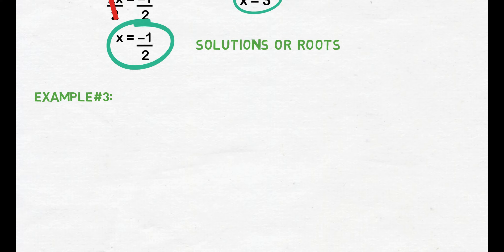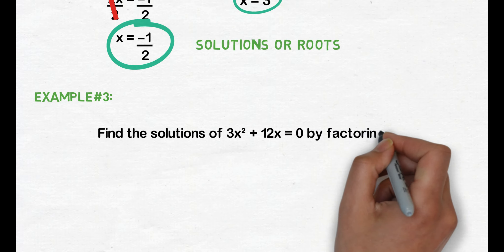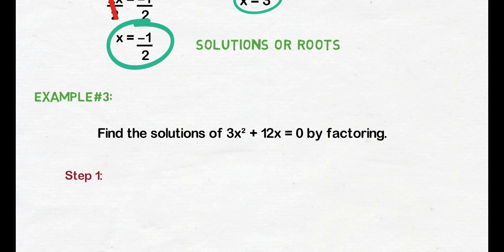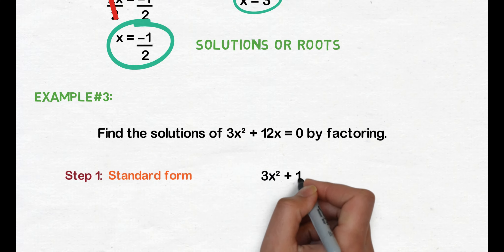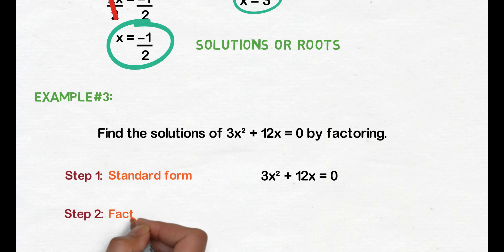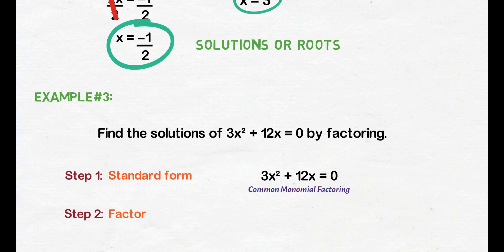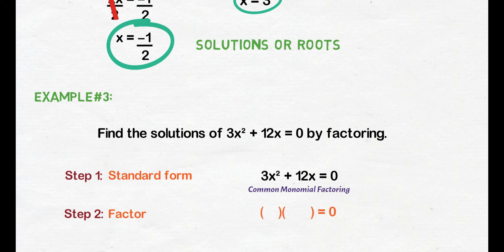Example number 3: find the solutions of 3x squared plus 12x equals 0 by factoring. Step 1, transform the quadratic equation into standard form. Since naka-standard form na ang given quadratic equation, i-re-write lang natin ito. Step 2, factor the quadratic expression. Sa ganitong form ng quadratic equation na ax squared plus bx equals 0 na wala tayong constant term, gagamit tayo ng factoring method na tinatawag na common monomial factoring. Gagawa tayo ng mga parentheses: ang unang parentheses ay para sa monomial factor at ang pangalawang parentheses ay para sa binomial factor.